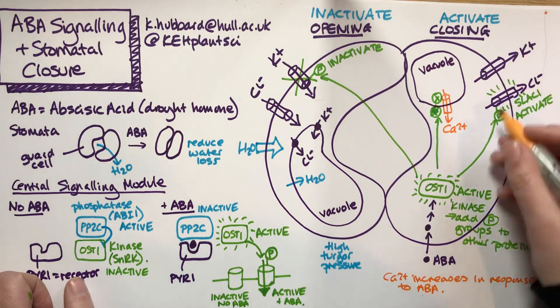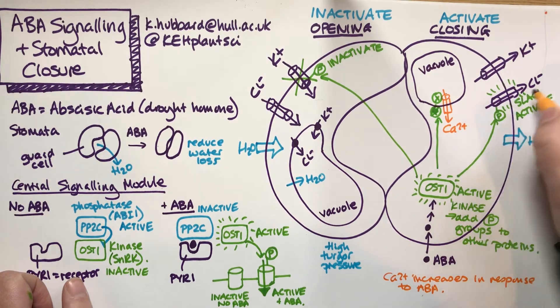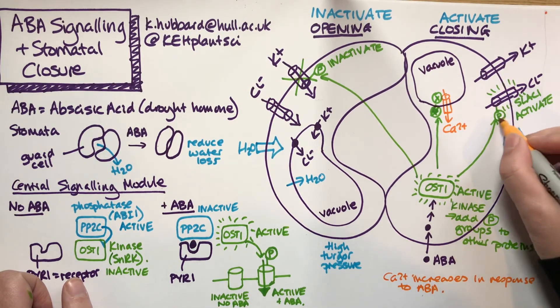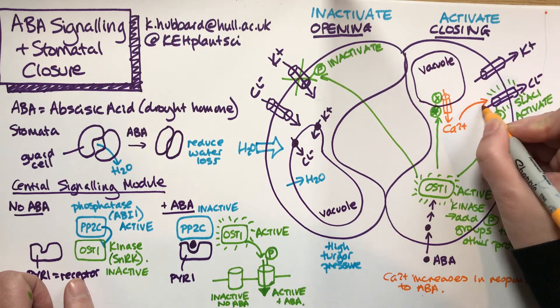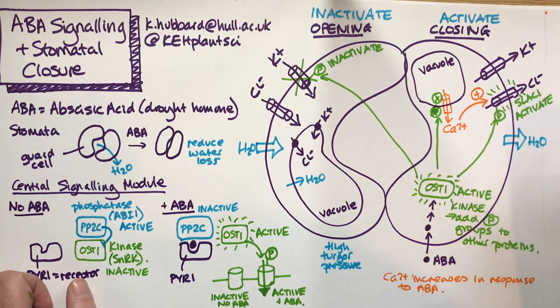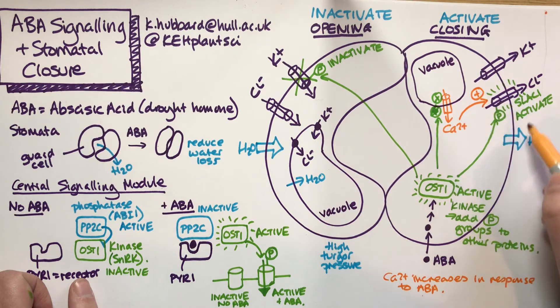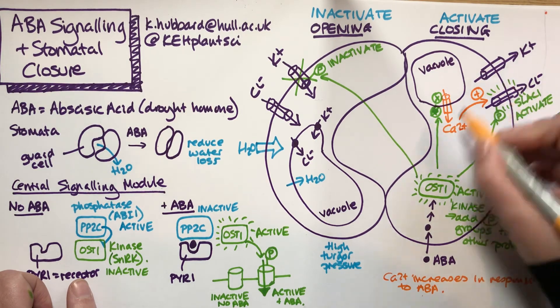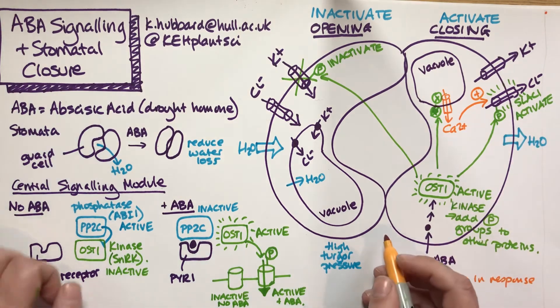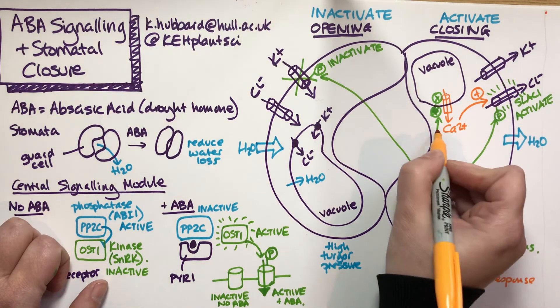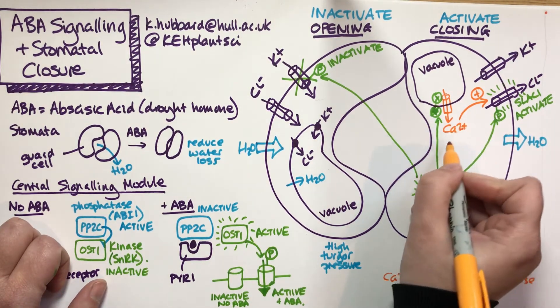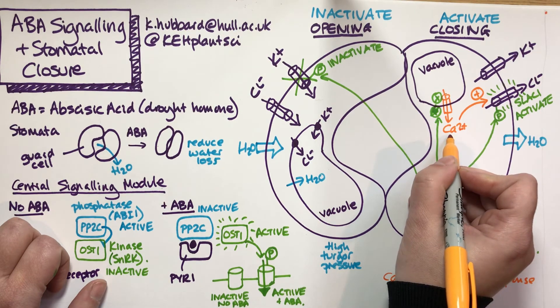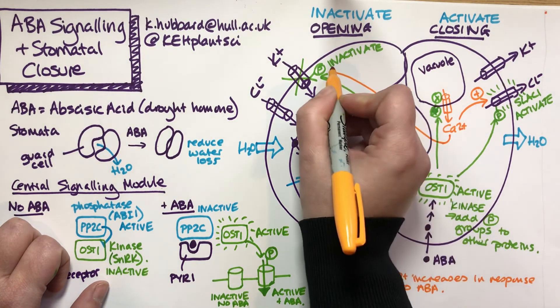Calcium also goes and does similar things. This chloride channel can be activated by phosphate, but it can also be activated via calcium. It's sensitive to both signals. It doesn't matter which signal it receives; both will activate the channel. You can have calcium-dependent or independent signaling activating that channel. Calcium will do the same thing with the potassium channel, coming to inactivate it.